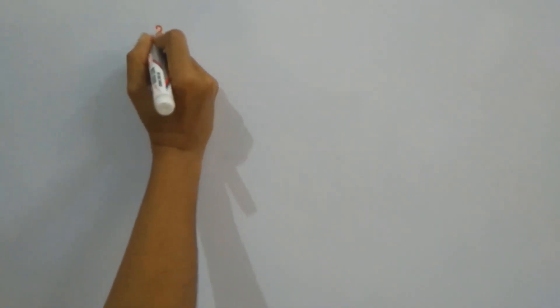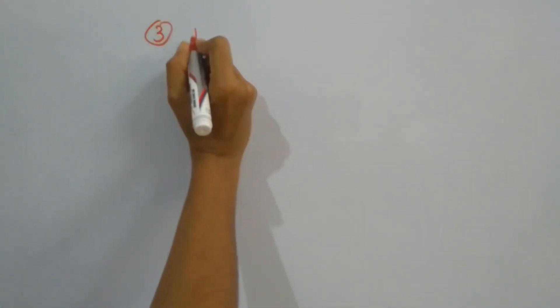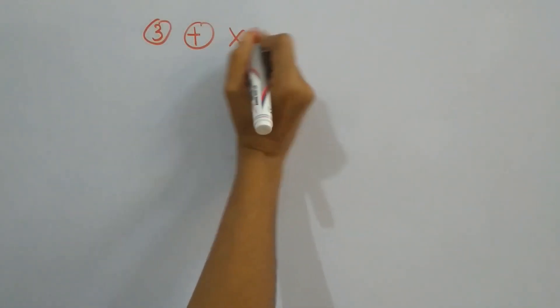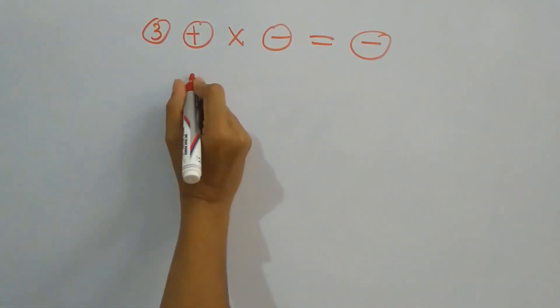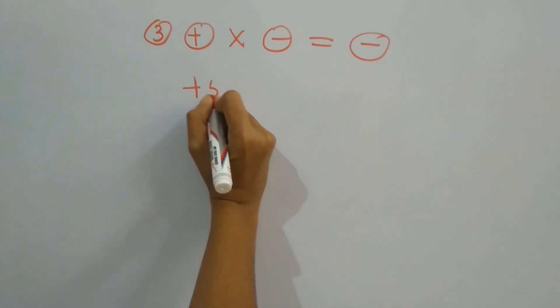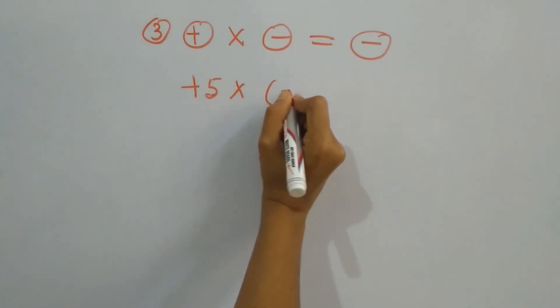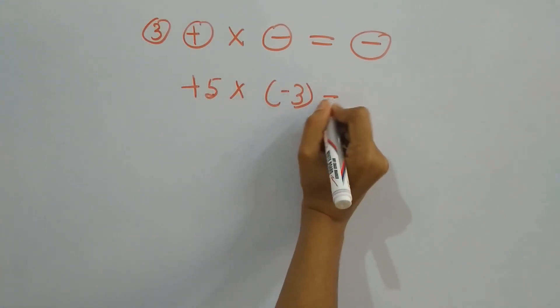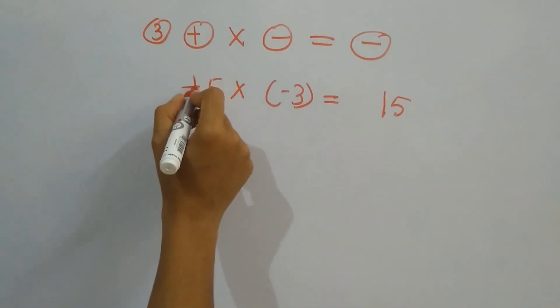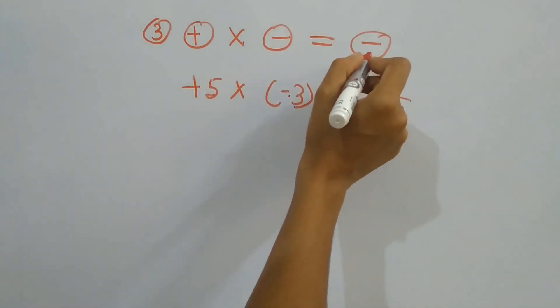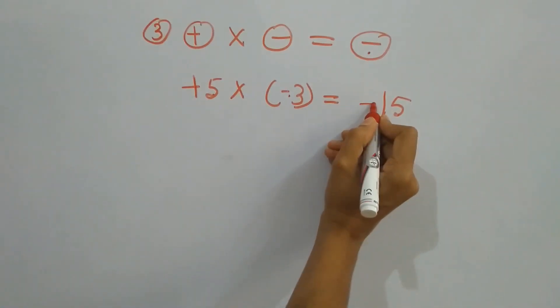In the third case, if you multiply a positive number with a negative number, then the product will be a negative number. That is, plus 5 into minus 3. The answer is 15, but with the signs plus and minus, the answer will be a negative number.